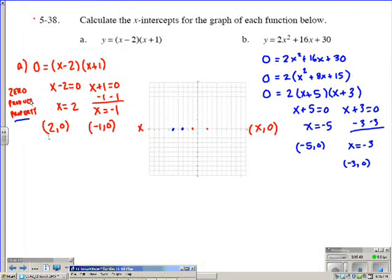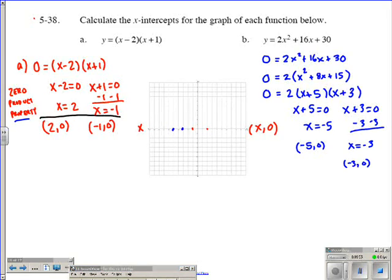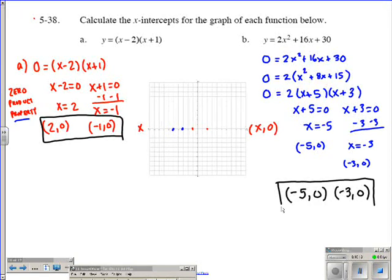So just one last little thing to recap here. For letter A, we had the points 2, 0, and negative 1, 0 as our x-intercepts. Letter B here, actually I'll rewrite these ones down here together, we had negative 5, 0, and we had negative 3, 0. Those were our x-intercepts for the second one. This is problem 5-38. Hopefully this helped answer any questions you had.